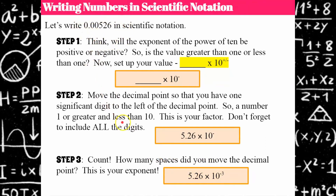Think about it: 10 to the negative three is one over 10 cubed, which is one one-thousandth. Multiply that by 5.26 and you have 526 thousandths.